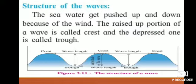The next topic is the structure of waves. The seawater gets pushed up and down because of the wind. The raised-up portion of a wave is called the crest, and the depressed one is called the trough. The vertical distance between a crest and the following trough is called the amplitude of the wave.